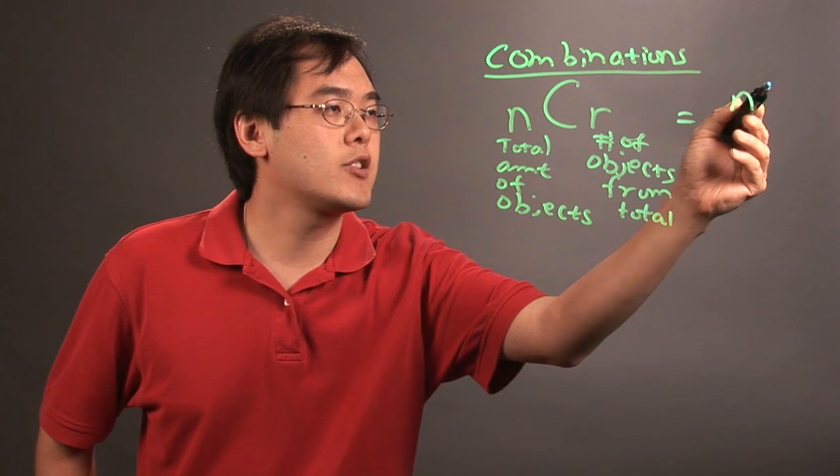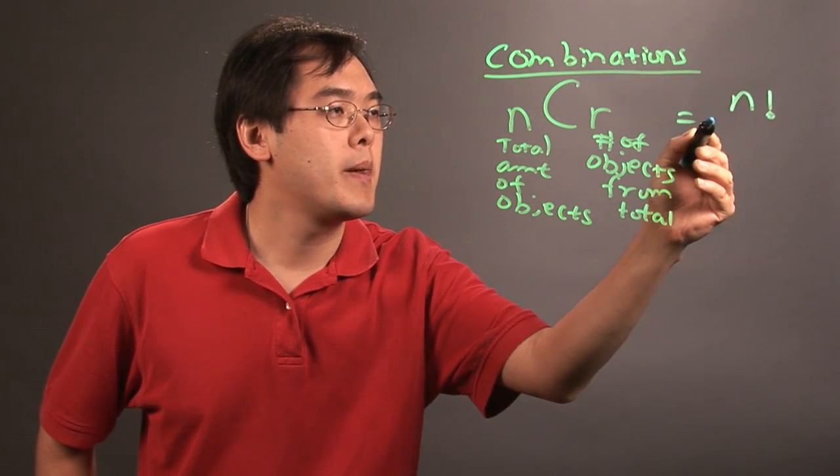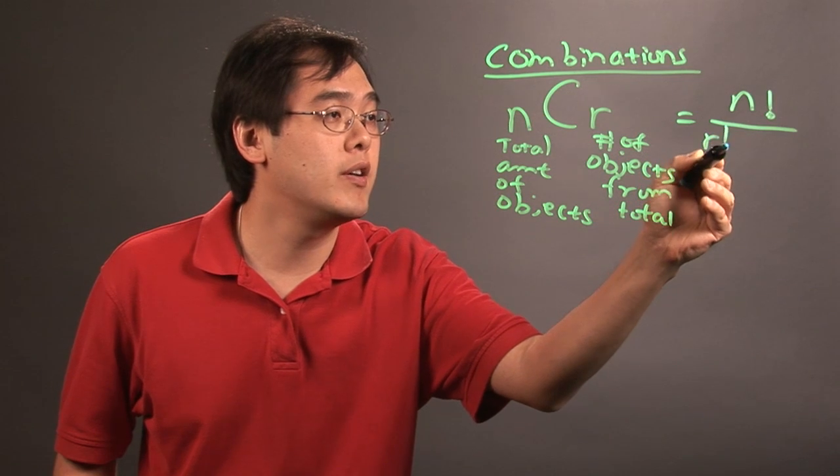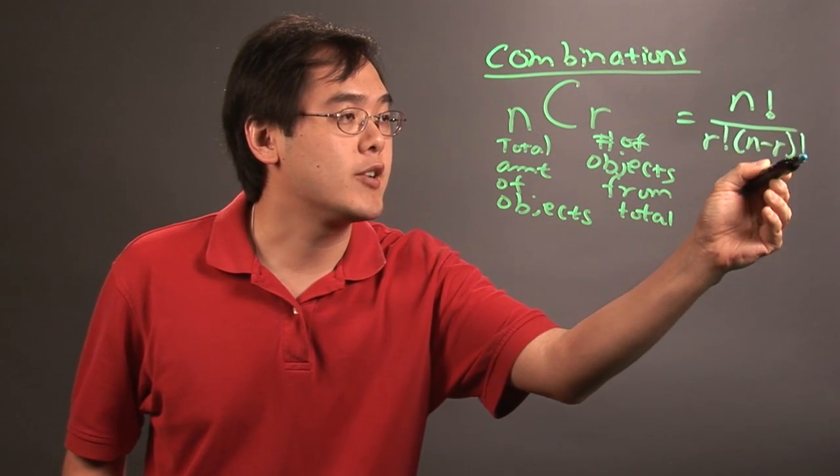So the formula is n factorial in the numerator divided by—now there's going to be two parts in the denominator—r factorial as well as n minus r factorial.